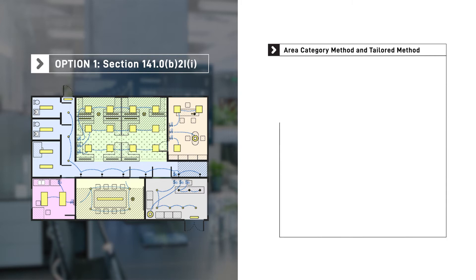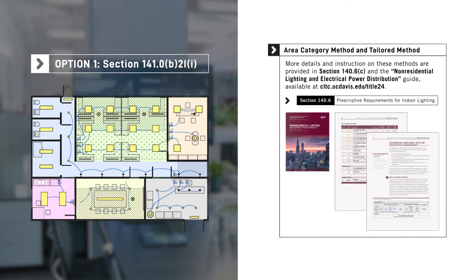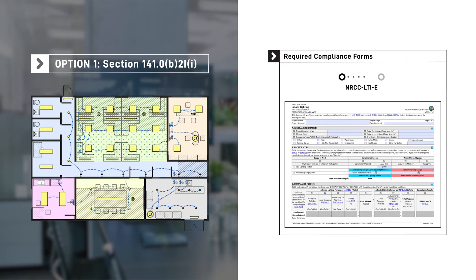Other lighting power allowance calculation methods include the area category method and the tailored method. More instruction on these methods is provided in Section 140.6-C and the Non-Residential Lighting and Electrical Power Distribution Guide available at cltc.ucdavis.edu/title24. The lighting power allowance calculations, lighting schedule, and specified lighting controls are documented in the Certificate of Compliance Form NRCC-LTI-E.